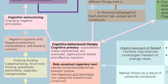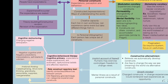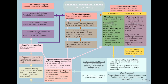This ties back into theory building and constructive revision, into personal constructs as these expectations, perceptions, and behaviors change, assisted through the aid of the modulation corollary. In summary, we looked at personal construct theory proposed by George Kelly, covering the experience cycle, personal constructs, fundamental postulate, constructive alternativism, and cognitive behavioral therapy leading to cognitive restructuring.